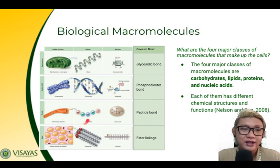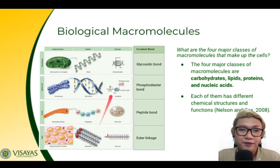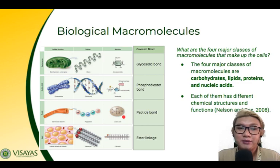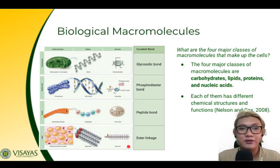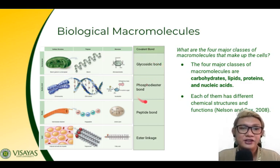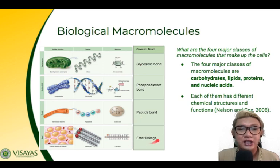A polypeptide is a protein polymer and a triglyceride is a lipid polymer. Starch is made up of monosaccharides; nucleic acids are made up of nucleotides; polypeptides are made up of amino acids; and triglycerides are made up of fatty acids and glycerol. The covalent bonds that link monomers into polymers are: glycosidic bond for carbohydrates, phosphodiester bond for nucleic acids, peptide bond for proteins, and ester linkage for lipids.